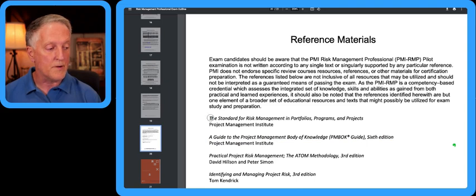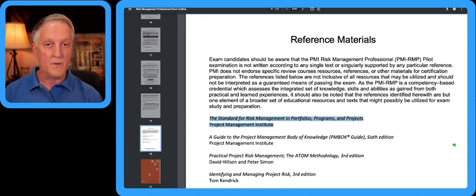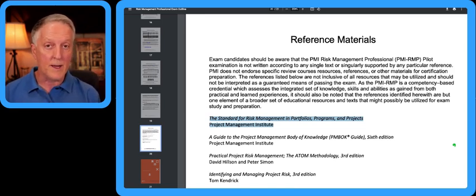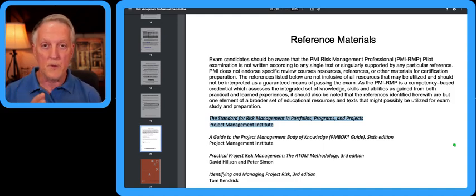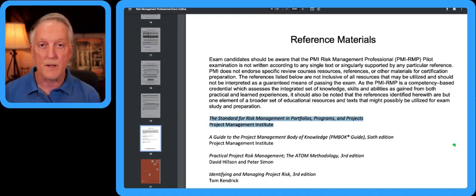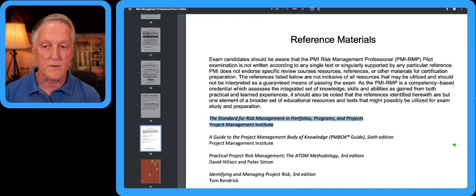The other really important thing is they are pointing us to the newer risk standard. There are actually two risk standards from PMI. There was one published back in 2009 called the Practice Standard for Project Risk Management — that is the standard you should be studying if you're planning to take the current exam. For the new exam, they are now referring us to the Standard for Risk Management in Portfolios, Programs, and Projects, which was published in 2019.